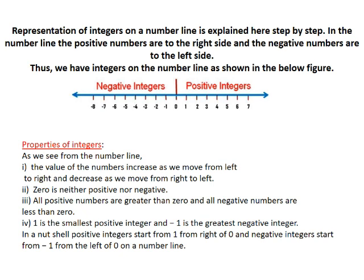Now, we will see some of the properties of integers. As we see from the number line, the value of the numbers increase as we move from left to right and decrease as we move from right to left. 0 is neither positive nor negative.